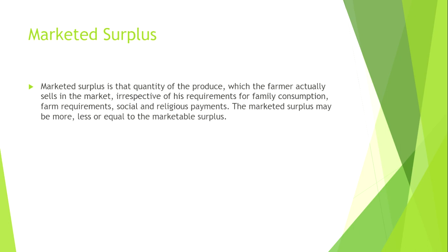Let me show you an example. A farmer has total production of 20 quintals. He sells 10 quintals in the market. His family and livestock requirement is 8 quintals. In this case, since he is selling 10 quintals but his requirement is only 8, the marketed surplus is more than the marketable surplus.